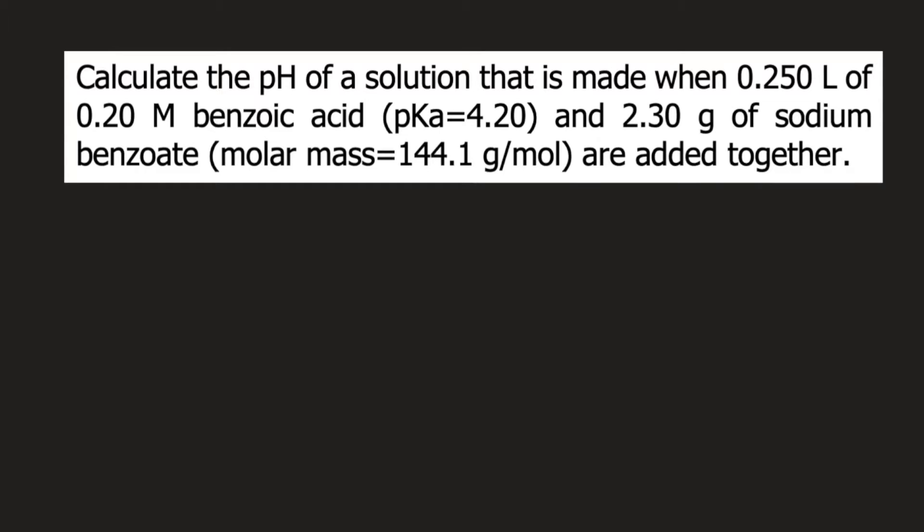Calculate the pH of a solution that is made when 0.250 liters of 0.20 molar benzoic acid, with a pKa of 4.20, and 2.30 grams of sodium benzoate with a molar mass of 144.1 grams per mole are added together.